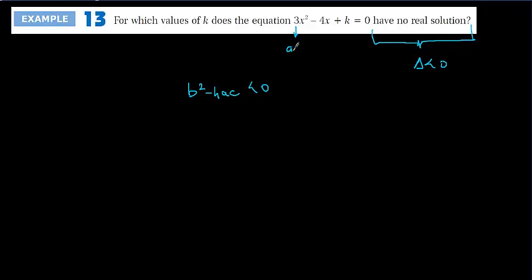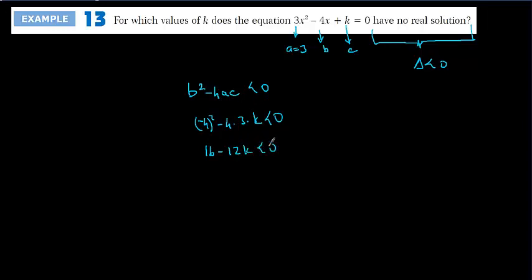In this equation, a equals 3, and we identify b and c. So b squared minus 4ac becomes minus 4 squared minus 4 times 3 times k, which must be less than 0. That gives us 16 minus 12k less than 0. Rearranging, 16 is less than 12k, and dividing both sides by 12 gives 16 over 12 less than k.